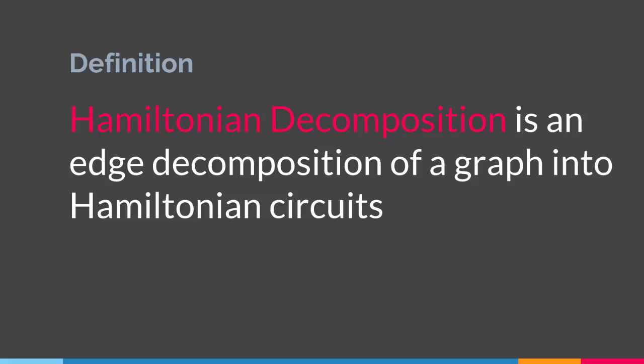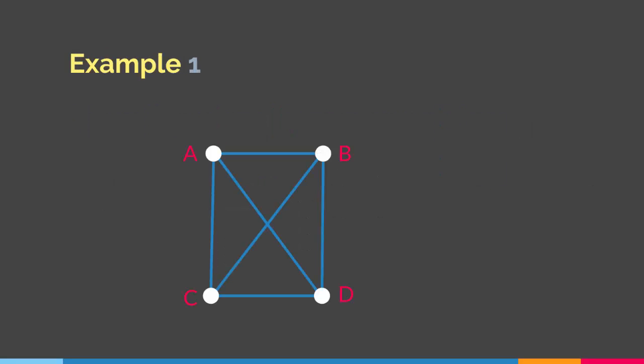So let's say we have a graph that is Hamiltonian. Basically we are decomposing this graph based on how many Hamiltonian circuits we have. So let me give you an example. Let's say we have a graph like this. If you look at it for a second, there are a couple of Hamiltonian circuits in this particular graph.